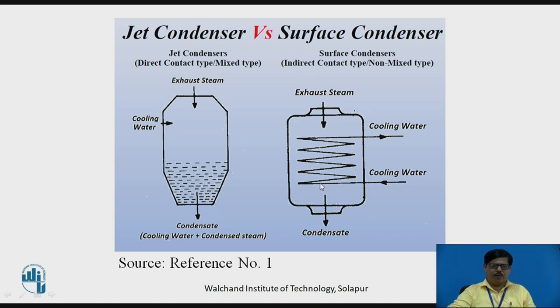In case of surface condensers, which are called as Indirect Contact Type or Non-Mixed Type, the cooling water is passed through cooling coils or cooling water tubes. Therefore, the condensate obtained is only the condensed exhaust steam, not the cooling water, and the cooling water circuit is separate.